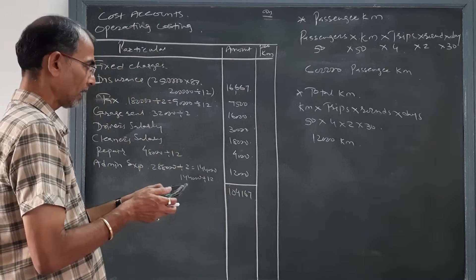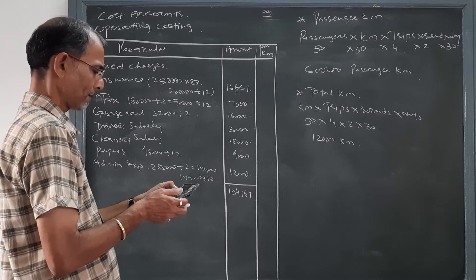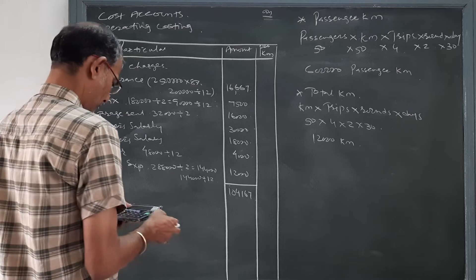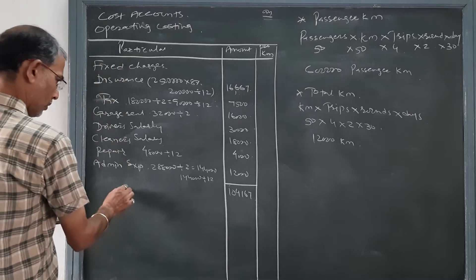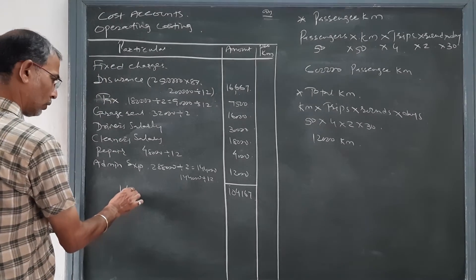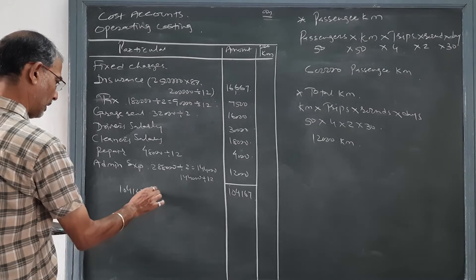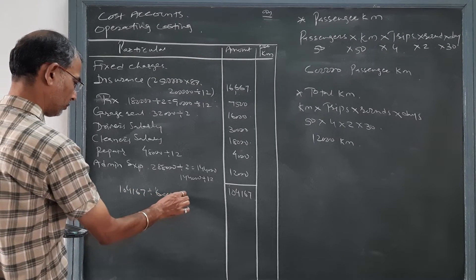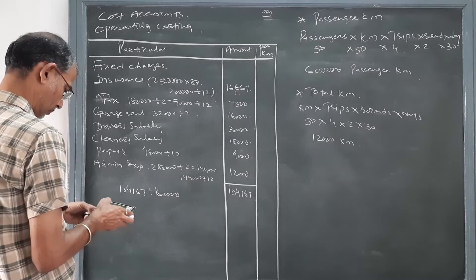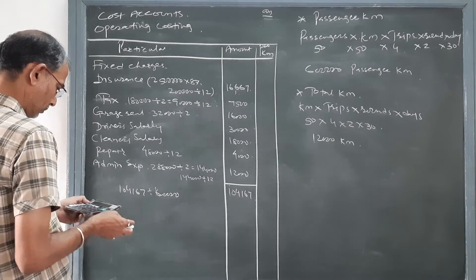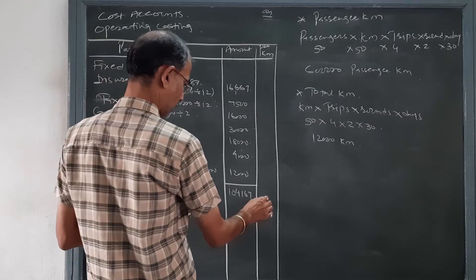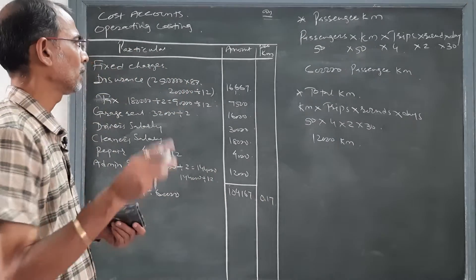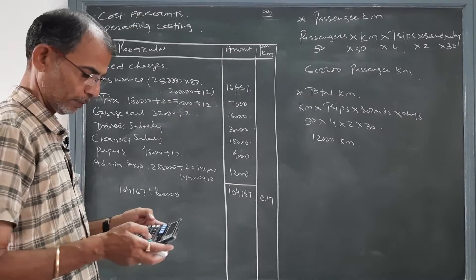Let's check again. Total standing charges of 1,04,167 divided by 6 lakh passenger-kilometers gives 0.17 per passenger-kilometer, that is 17 paise per passenger-kilometer.